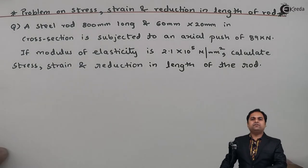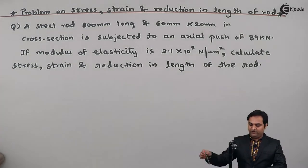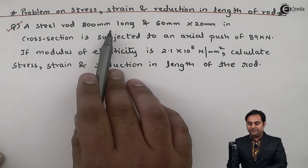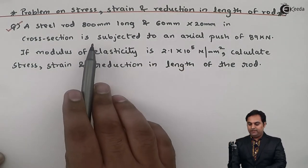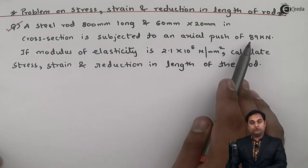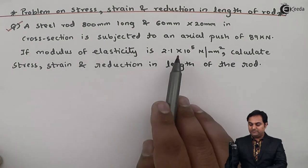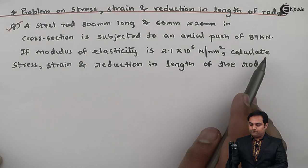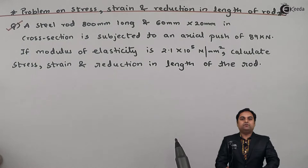In this video we will see a problem related to stress and strain. A steel rod 800 mm long and 60 mm × 20 mm in cross-section is subjected to an axial push of 89 kilo Newton. If modulus of elasticity is 2.1 × 10⁵ Newton per mm square, calculate stress, strain, and reduction in length of the rod.